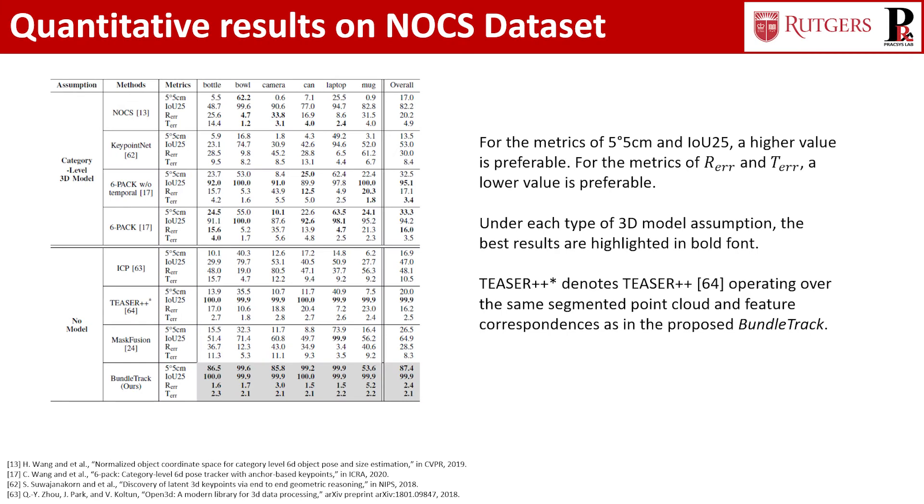Here shows the quantitative results on NOCS dataset. Comparison methods include state-of-the-art methods NOCS, HeatPointNet, MaskFusion, se(3)-TrackNet, T3++, and ICP. For the metrics of 5-degree 5-centimeter and IOU25, higher means better. For metrics R-error and T-error, denoting rotation error in degrees and translation error in centimeters respectively, lower means better.